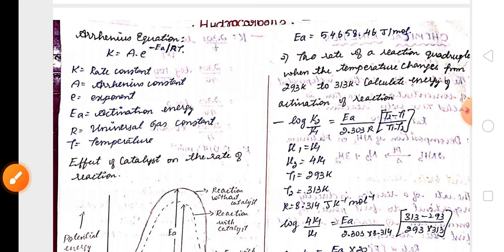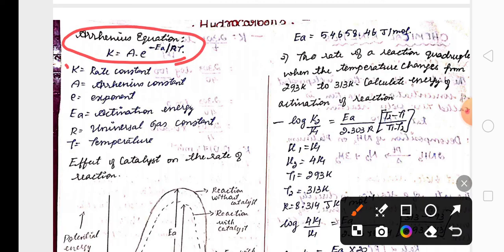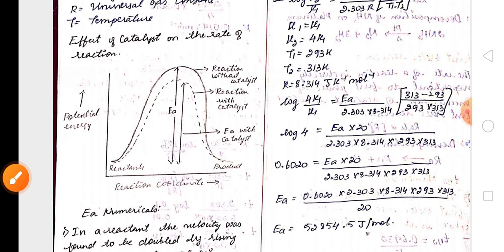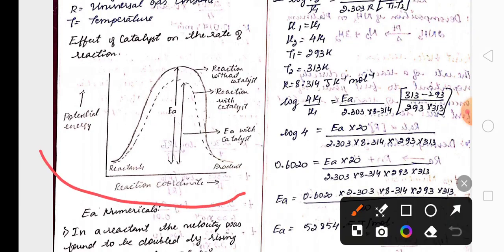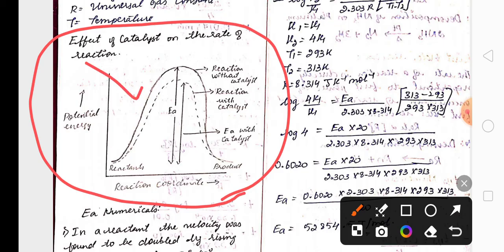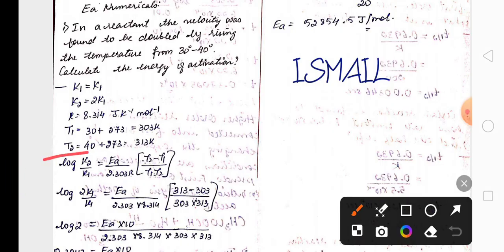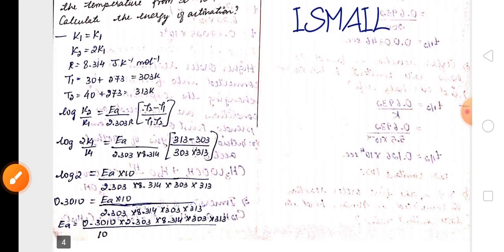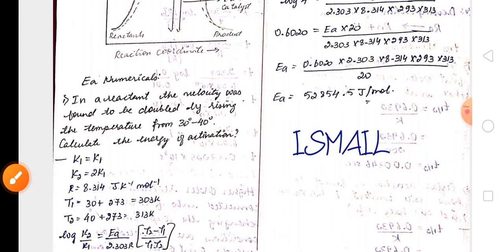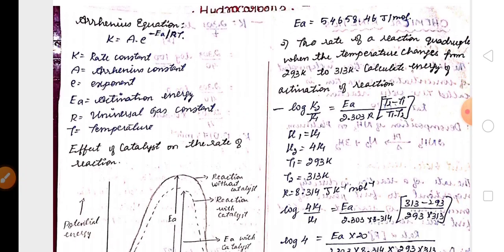Remember the Arrhenius equation and its expression — very important for two marks. They may also ask you to draw the graph of the effect of a catalyst on the rate of reaction. Another formula to find the energy of activation is: log(k₂/k₁) = Eₐ / (2.303 R) × (T₂ − T₁) / (T₁ × T₂). Practice the two example numericals provided.